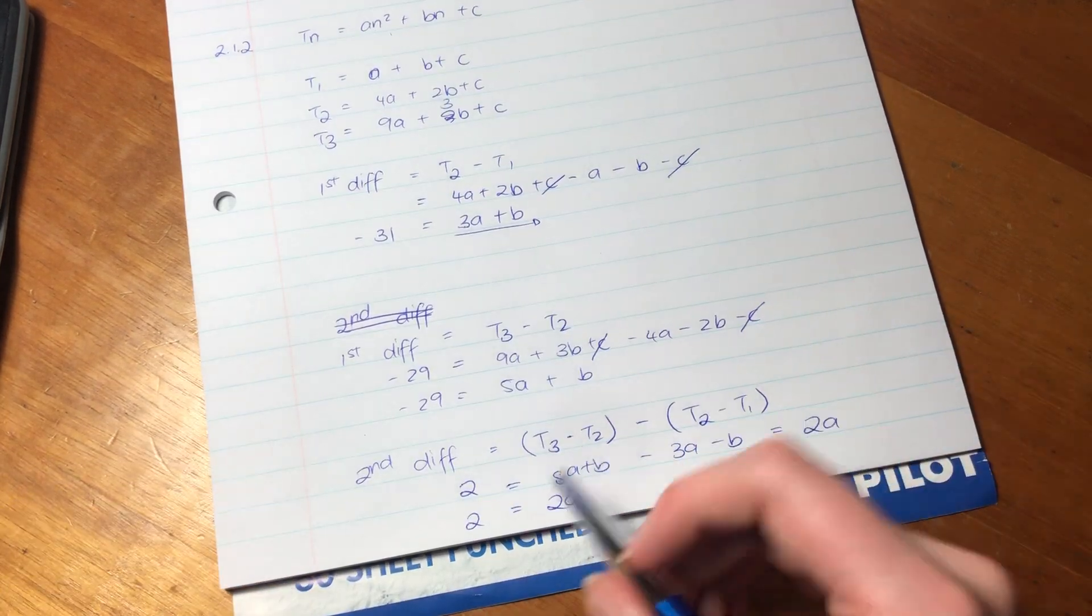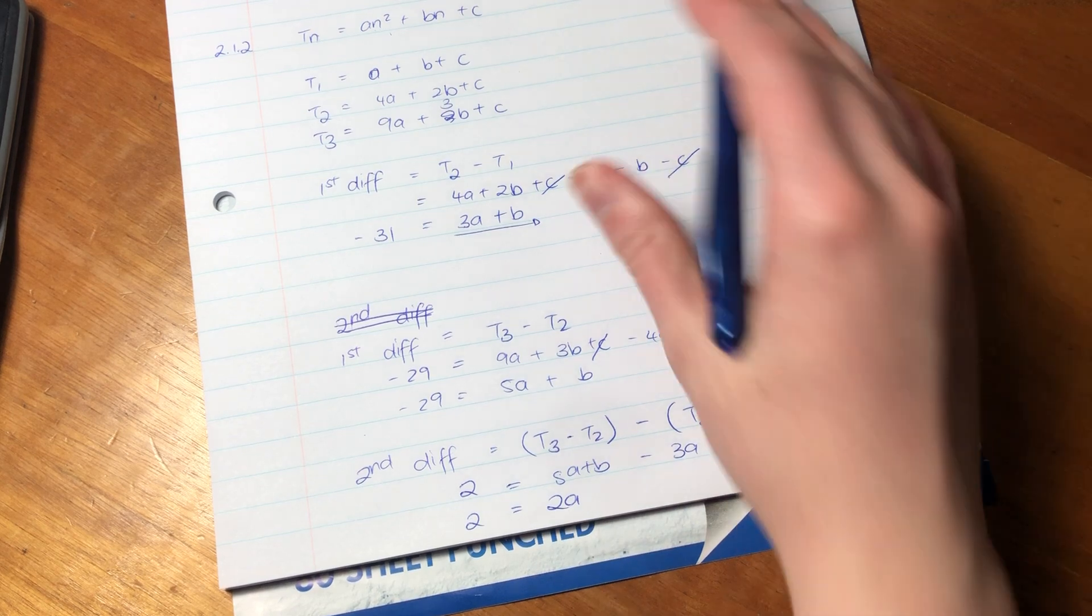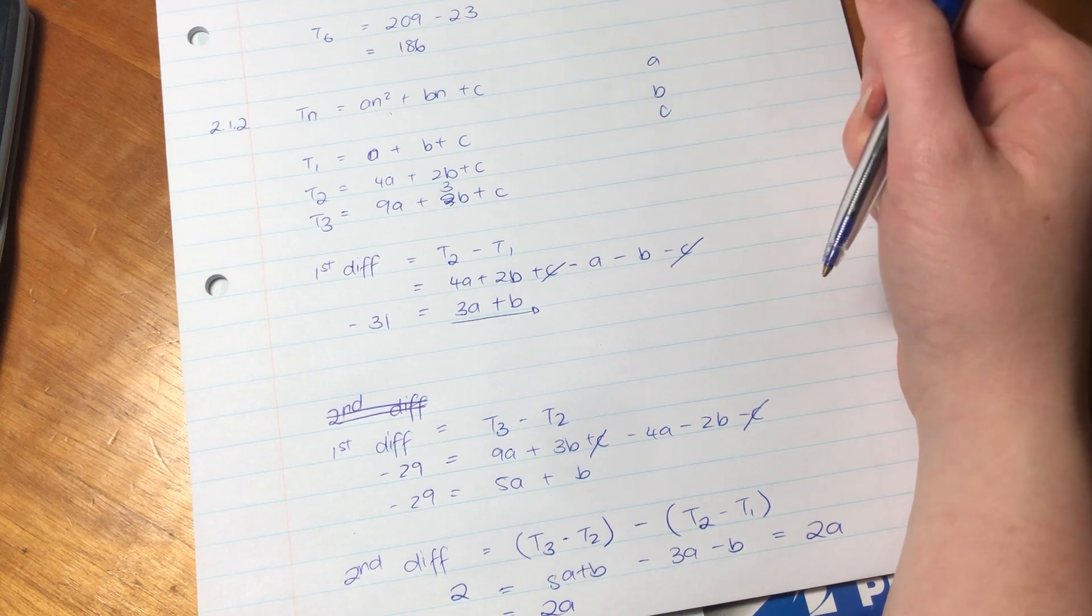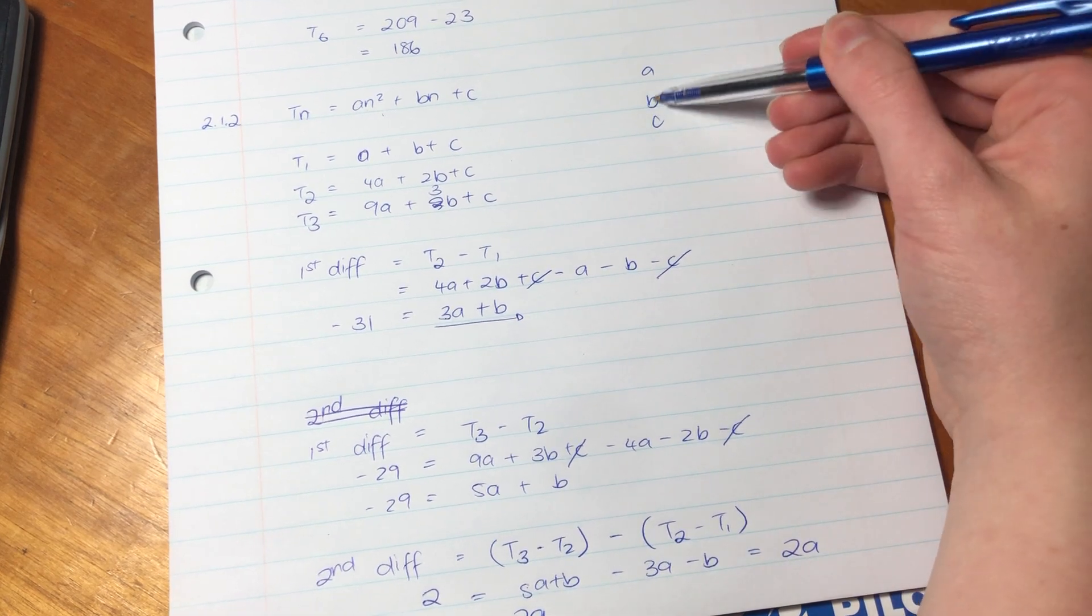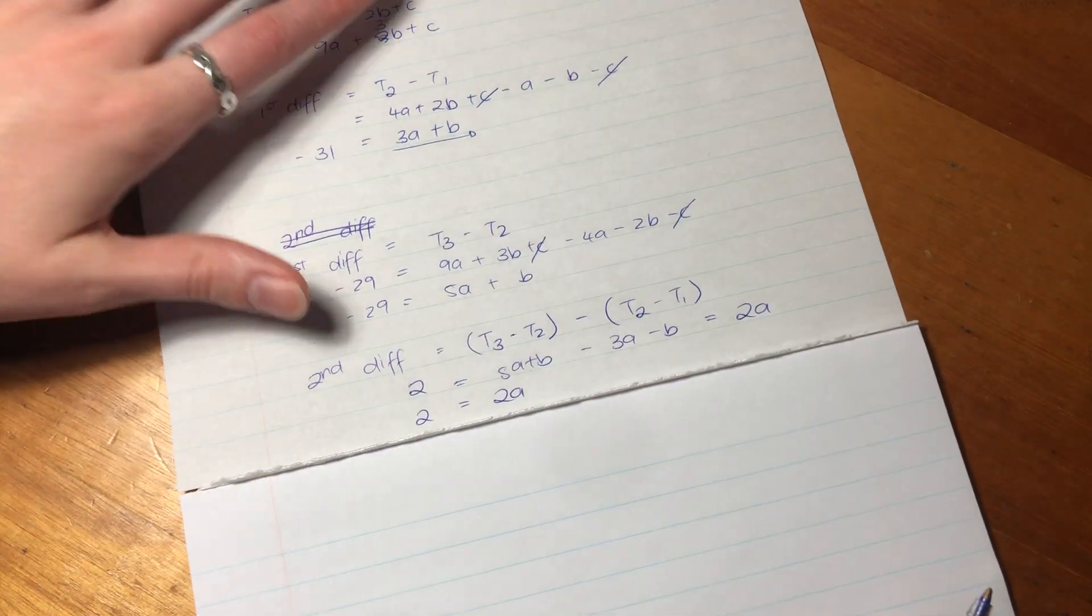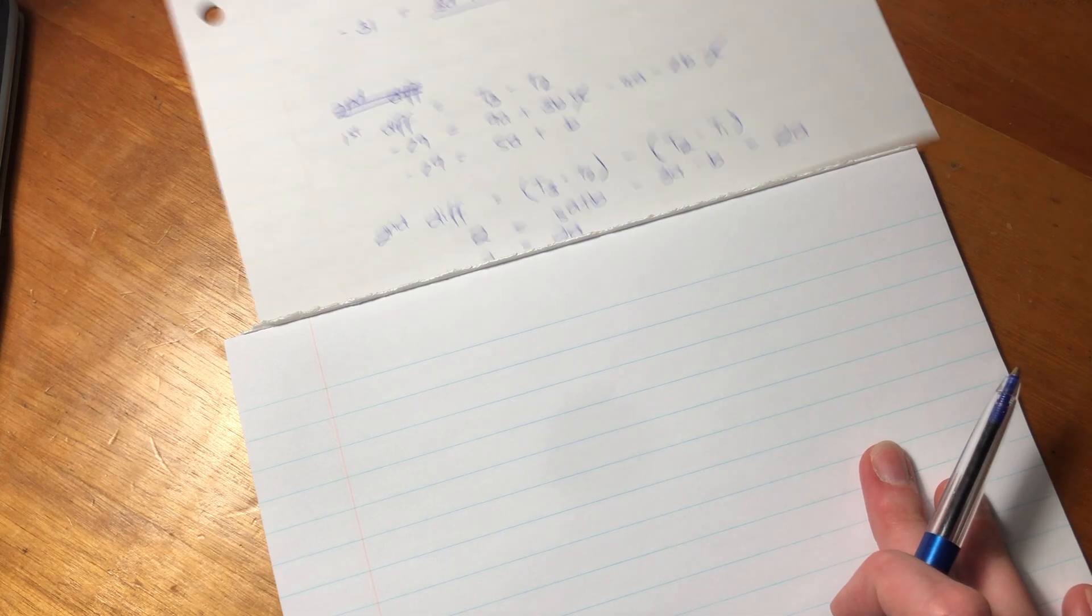we're going to say the difference between T3 and T2 minus the difference between T2 and T1, which is what we've calculated up here. So it's 5A plus B minus 3A minus B, which equals 2A. So we know that 2 equals 2A. So now we can then solve for A. So what we're trying to do here, just to remind us what we're doing, we're trying to find A, B, and C.